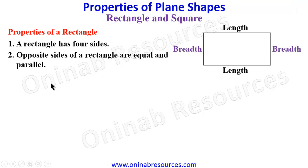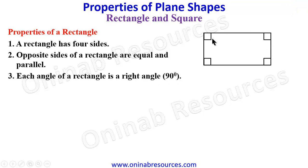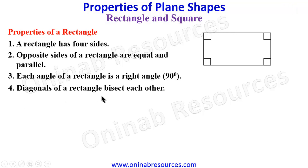They are both equal. Then we have: each angle of a rectangle is a right angle — the right angle is 90 degrees. Each angle here is 90 degrees, so that when you add them up it gives you 360 degrees. We have the next property as diagonals of a rectangle bisect each other.